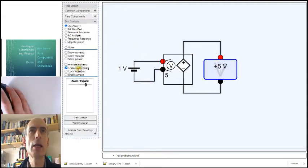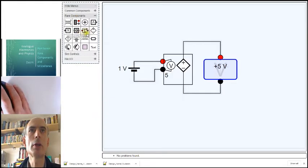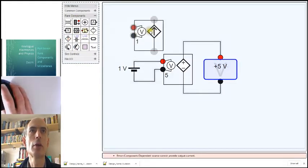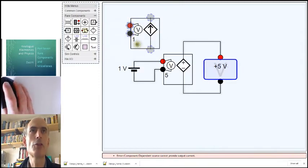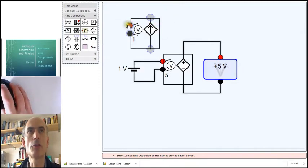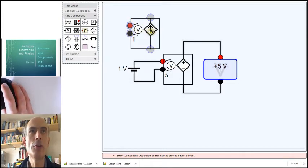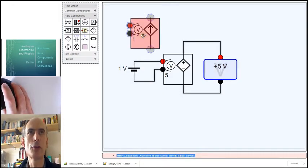There's also a dependent current source, which does a similar thing only for currents. The current that it forces out of its output is a fixed factor times the voltage between its two inputs. This is a voltage-dependent current source. You can also have a current-dependent current source.